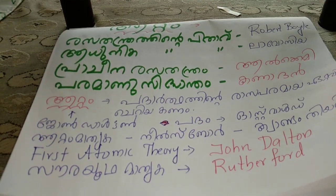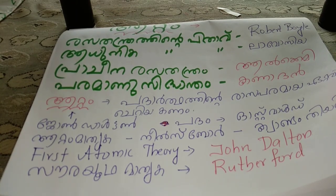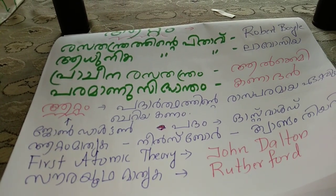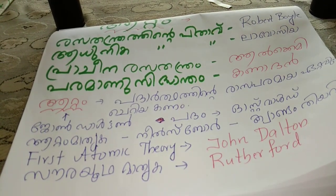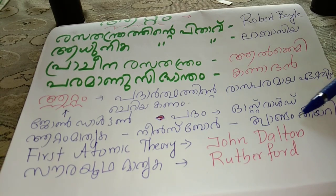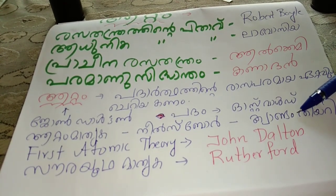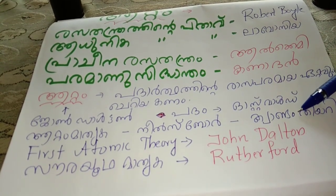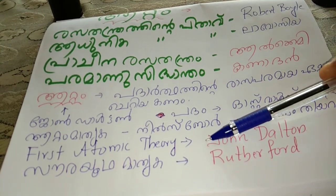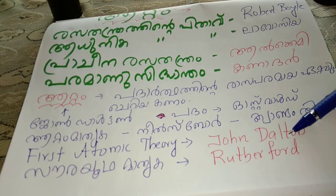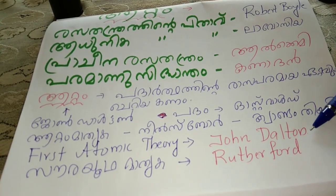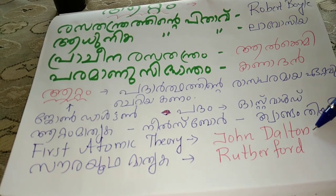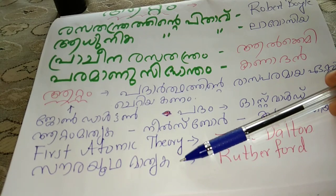John Dalton is the key figure here. He is the one who proposed and introduced the atomic theory. John Dalton is the most important contributor to atomic theory, which he proposed in the 19th century.